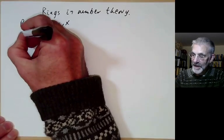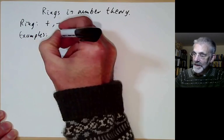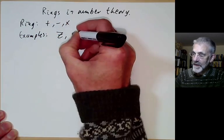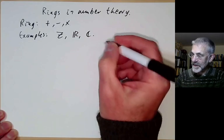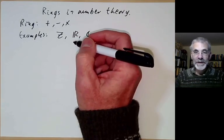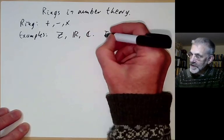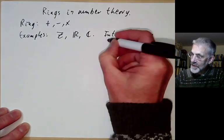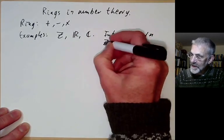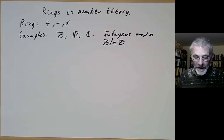Some examples of rings: we have the integers, usually denoted by Z, the real numbers, and the complex numbers. A particularly important example we've been studying is the integers modulo n, which I'll denote by Z divided by nZ, for a reason that will be coming up fairly soon.